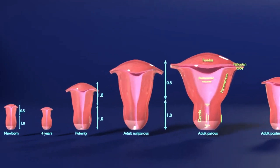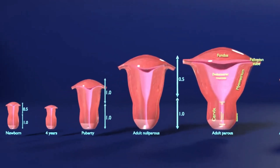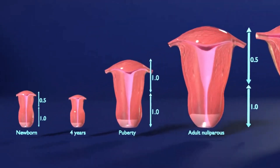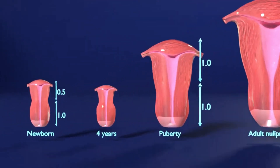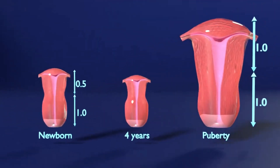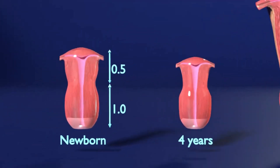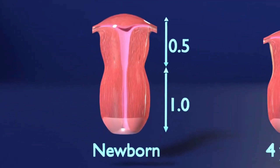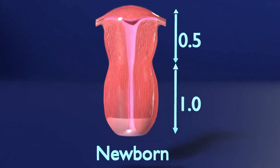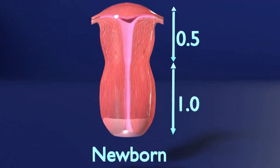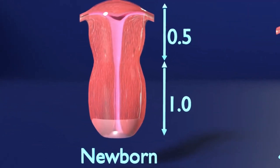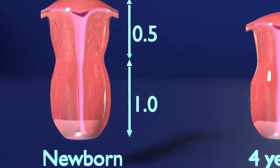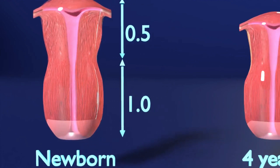In this view, the uterus of a neonate can be seen. The neonatal uterus is prominent under the influence of maternal and placental hormones. The cervix is larger than the fundus, with a fundus-to-cervix ratio of 1:2. The uterine length is 3.5 cm and the maximum thickness is 1.4 cm. In sonography, the endometrial line is often echogenic, and some fluid can also be seen within the endometrial cavity.